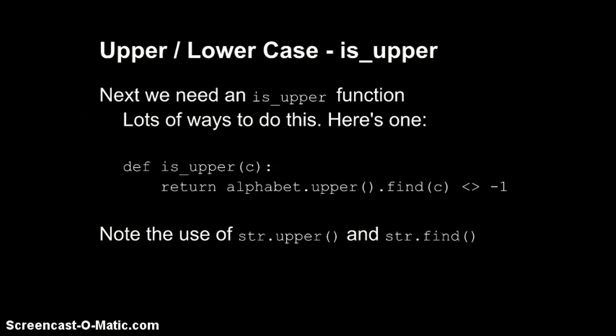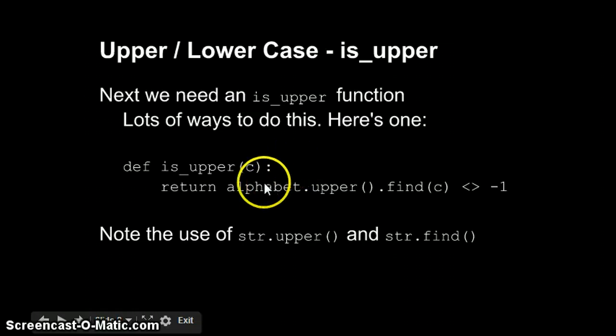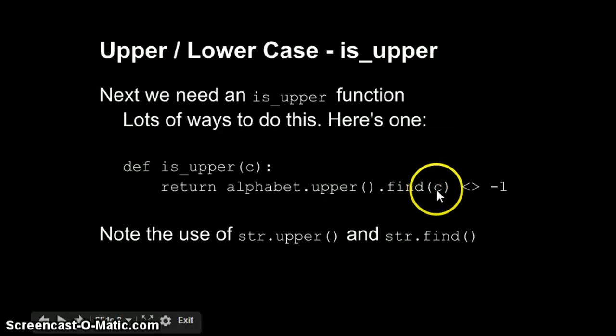Now I have an is_upper function, and what it's going to do is check if the letter is uppercase. It gets one letter C, and it's going to check to see whether C is uppercase. We can do that in a lot of ways. What I did was force the alphabet string to uppercase, and then I use find to see whether C is in it. C is in it if find returns a value that is not equal to negative one. So I just return whether that's the case.